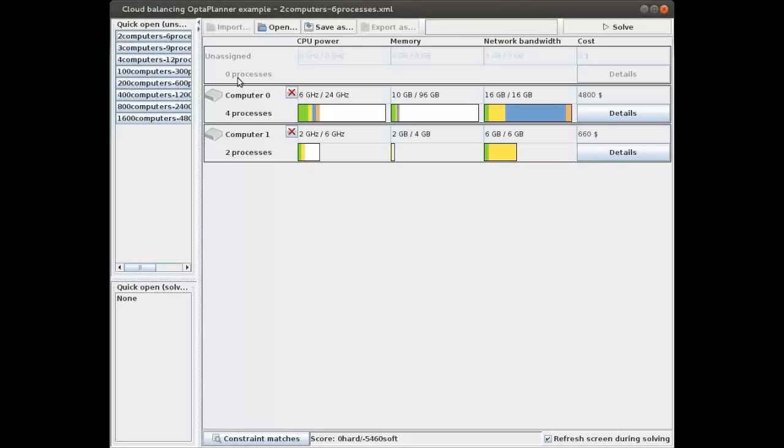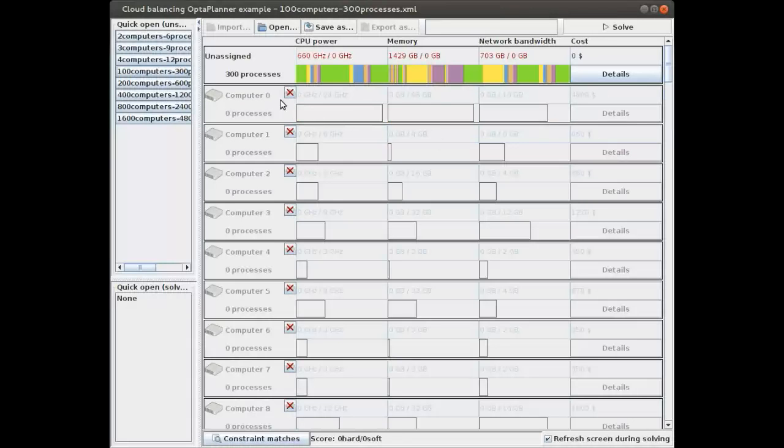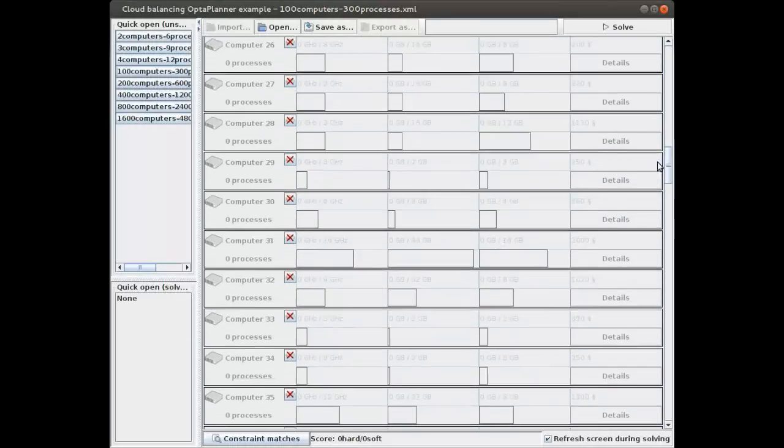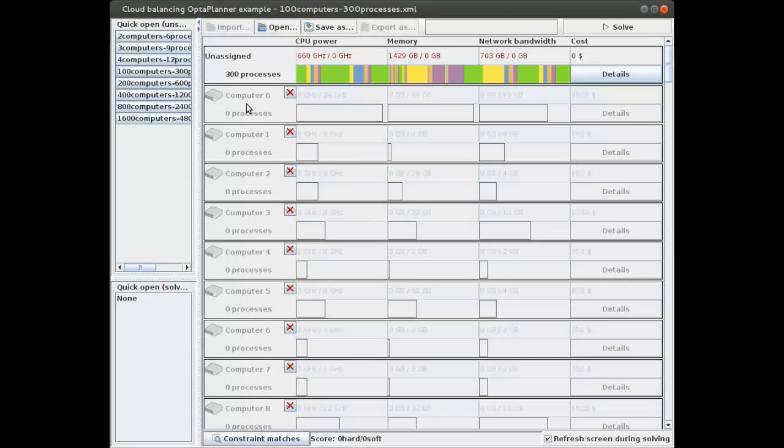Let's take a look at a bigger data set. Here we have 100 computers. If you scroll down you can see most of them. They have different characteristics. Some have more CPU power and memory and so forth. They are newer but then of course they usually have a higher price. We have 300 processes which are unassigned. So we need to figure out which process to put on which computer. Let's let OptaPlanner figure that out for us.